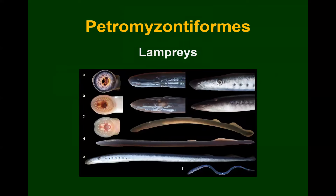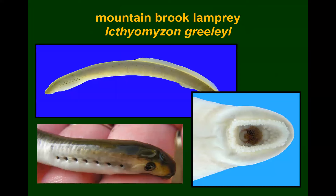We'll start with the order Petromyzontiformes — again, you don't need to know the orders, just the common names. These are the lampreys. They're eel-like but they're not actually eels; a lot of people confuse them. Some are parasitic and will attach to other fish with their unusual mouths and literally live attached to another fish. But others, like the mountain brook lamprey shown here, are not parasitic — they look like they could be, but they're not.